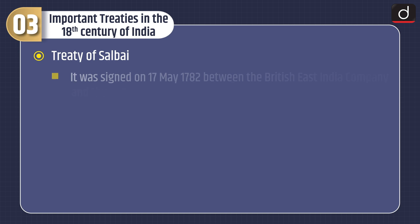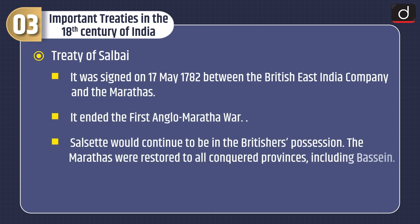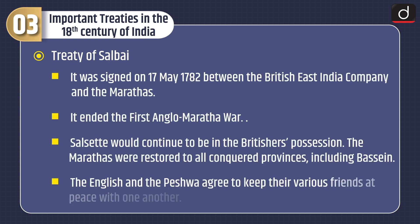Next is the Treaty of Salbai. It was signed on 17 May 1782 between the British East India Company and the Marathas. It ended the First Anglo-Maratha War. Salsette would continue in British possession. The Marathas were restored to all conquered provinces, including Bassein. The English and the Peshwa agreed to keep their various allies at peace with one another.